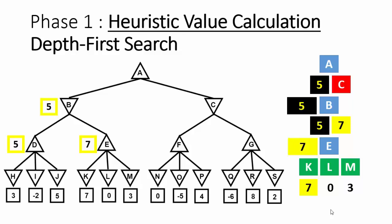We have now calculated the heuristic value for the first child of node A, which is node B. Next, we calculate the heuristic value for the second child of node A, which is node C, using the same strategy as was used for node B.